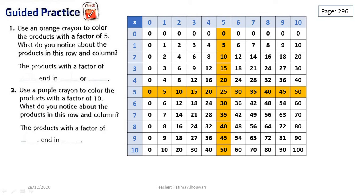Interesting. Now look at these products, grade 3. Here we have 0, 5, 10, 15, 20, 25, 30, 35, 40, 45, and 50. Look at these numbers — they end in 0, then 5, then 0, then 5. It's a pattern! So the products with a factor of 5 end in 0 or 5.